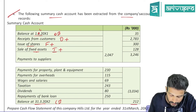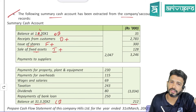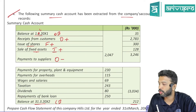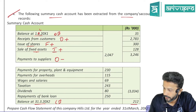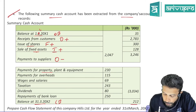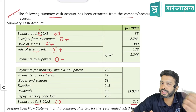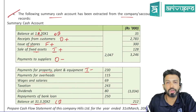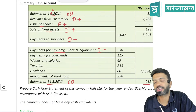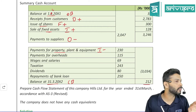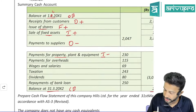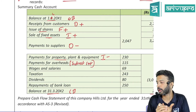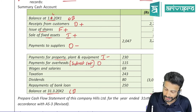Payment to suppliers — suppliers are creditors, part of day-to-day operations — Operating activity, cash going out, O negative. Payment for Property, Plant and Equipment — PPE purchased is an Investing activity, cash going out — I negative. Payment of overheads — overheads are indirect costs necessary for operations — Operating activity, O negative.